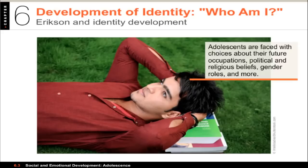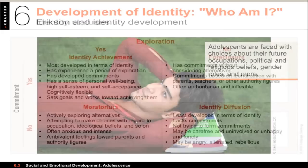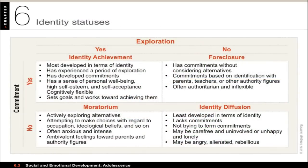On the other hand, he said adolescents who fail to acquire this sense often become subject to the whims of others. He referred to that as role diffusion. Another researcher, James Marcia, took that idea and expanded on it, developing what he called identity statuses. These are based on a combination of whether a person engaged in identity exploration and whether they made a commitment to a particular identity, giving you four possibilities.